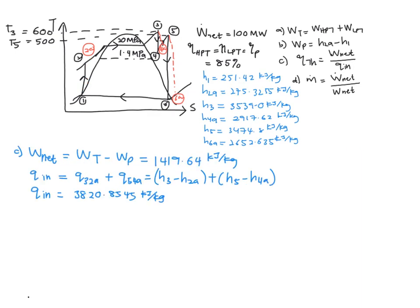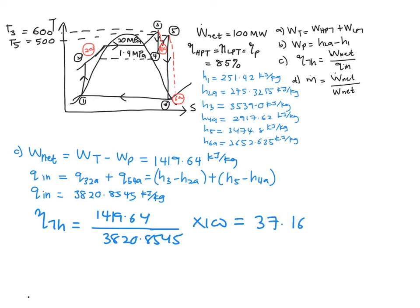So now that you've already obtained your work net and your Q in, your thermal efficiency will be 1419.64 over 3820.8545 times 100, so it is equal to 37.116%.